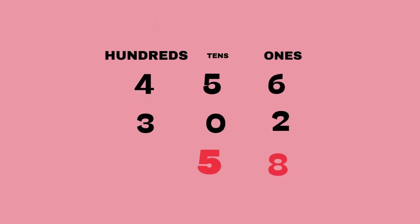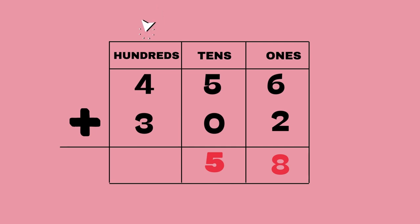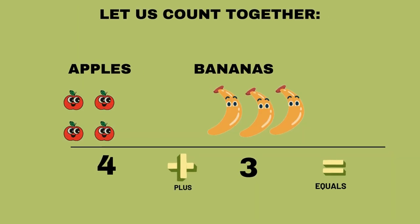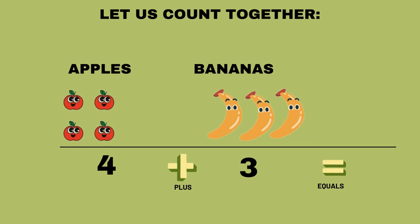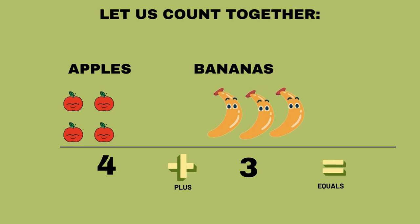Fantastic, our answer is five. Lastly, we'll add the hundreds column. Four apples plus three bananas equals... let's count: one, two, three, four, five, six, seven. So we have seven fruits.